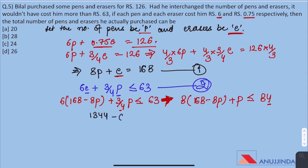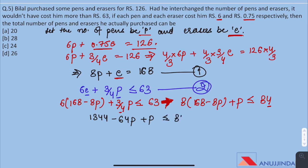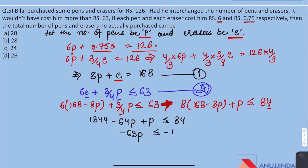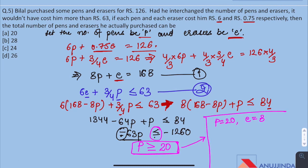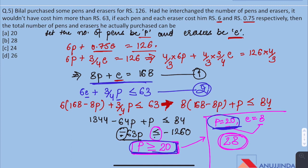Working through the inequality: 1344 − 64p + p ≤ 84, giving −63p ≤ −1260. Multiplying by a negative reverses the inequality sign, so p ≥ 20. Substituting p = 20 into Equation 1 gives e = 8. We cannot use values greater than 20 for p as they do not satisfy the equations. So the number of pens is 20, erasers is 8, and the total number of items is 28.